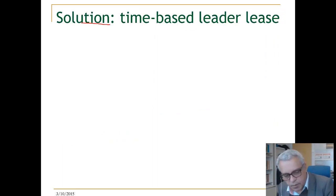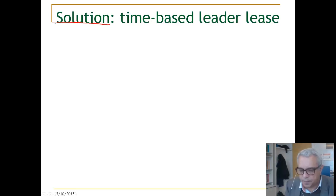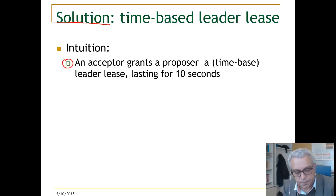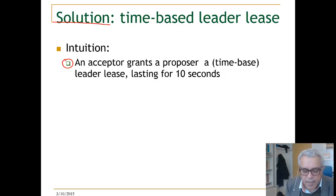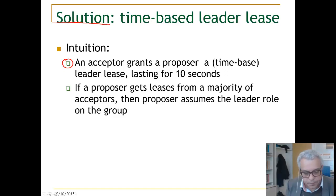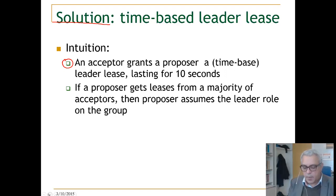The solution is a time-based leader lease, and the intuition goes as follows. We have a group of acceptors; an acceptor grants a proposer a time-based leader lease for a period of time — in this case, let's say 10 seconds. If the proposer gets the lease grant from a majority of acceptors, then the proposer assumes the leader role on this group.